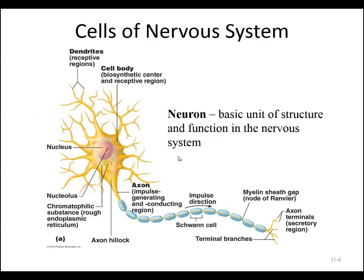We'll review this briefly and assign a function to each part of the neuron. The receiving part of the neuron are these extensions coming off the cell body, and we call these extensions dendrites. Dendrites are kind of like the antenna on a radio or old-fashioned televisions — they receive signals from either another neuron or a sensory receptor, bringing information such as light, sound, temperature, touch, etc. Information comes into the neuron from the dendrites in only a one-way flow toward the cell body.